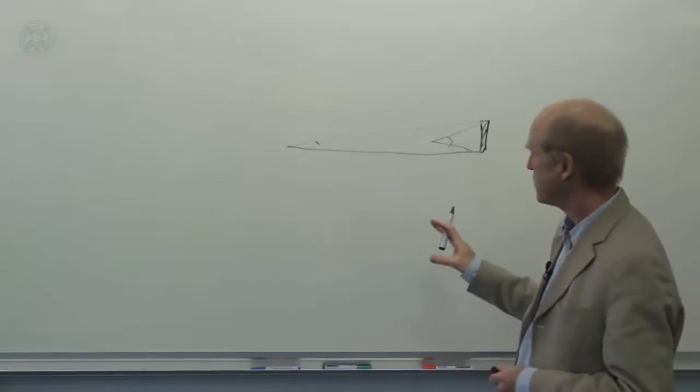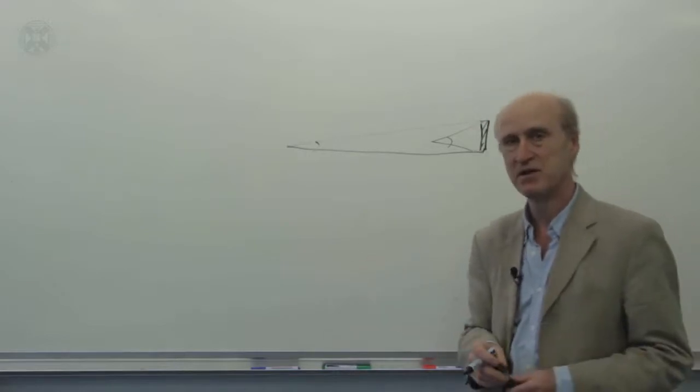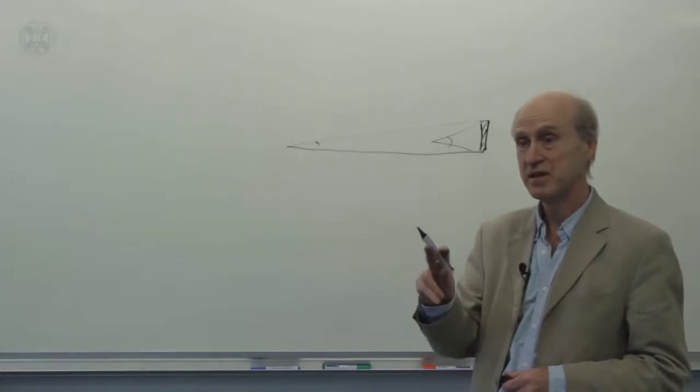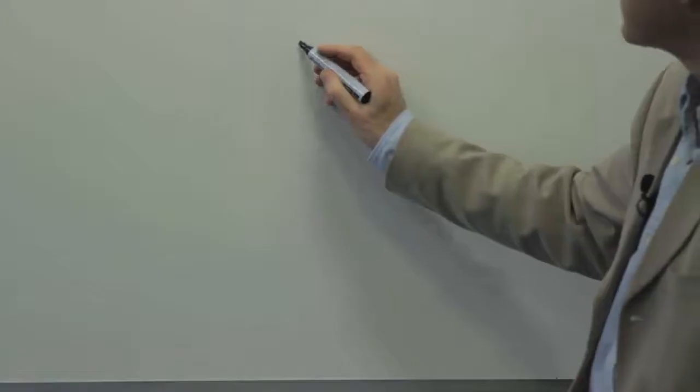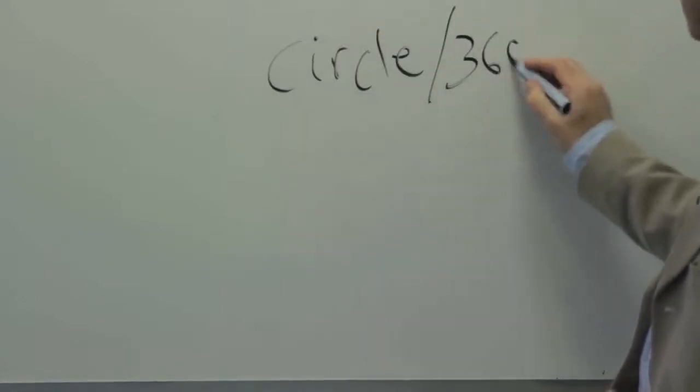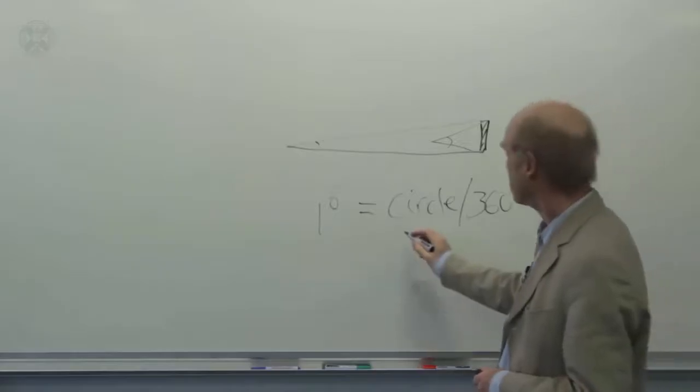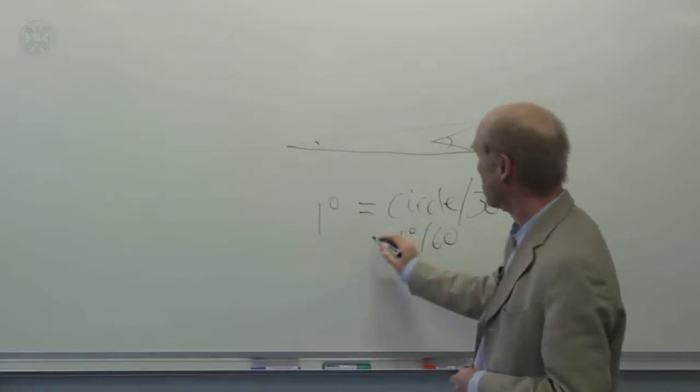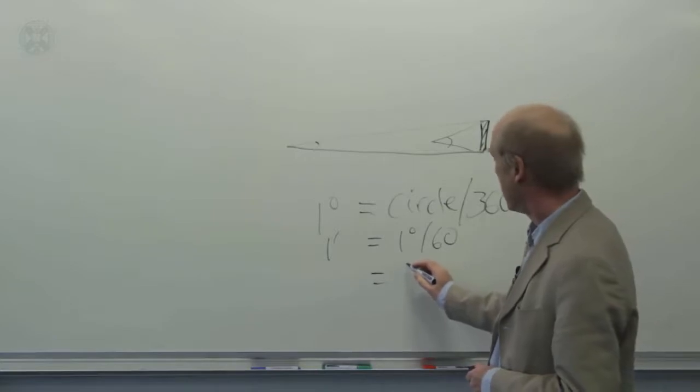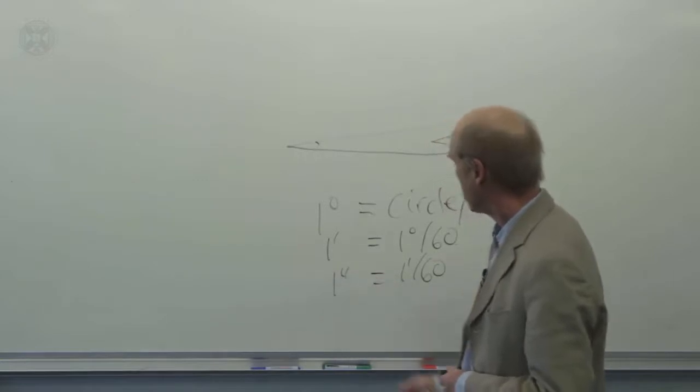So let's get this into perspective. When we measure angles, mathematicians measure angles in radians, but astronomers like sailors like degrees, minutes and seconds. So let's put that into perspective. So if we take the whole of the circle and we divide it into 360 parts, then that's one degree. If we take one degree and divide that into 60 parts, then that makes one arc minute. And if we take one arc minute and divide that into 60 parts, that's one arc second.